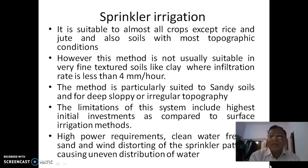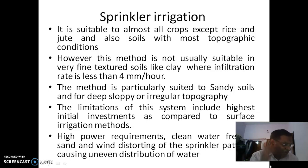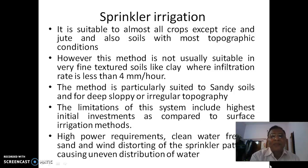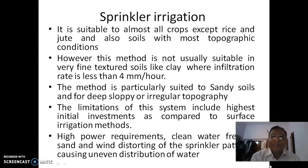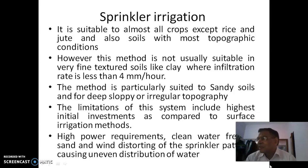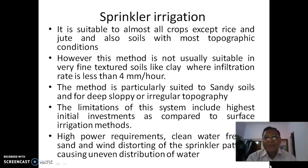Sprinkler irrigation is suitable for almost all crops, except rice and jute where standing water is sometimes required. Even rice can be grown with modern sprinkler irrigation. However, this method is not suitable for very fine textured soils like clay, because infiltration is very low — where infiltration rate is less than 4 mm per hour. The method is particularly suited to sandy soils and for deep, sloped or irregular topography.